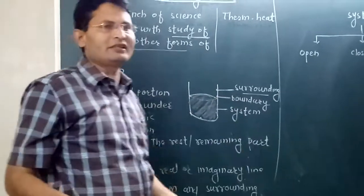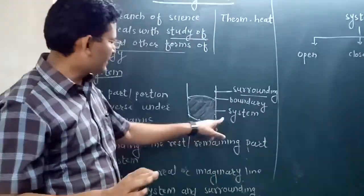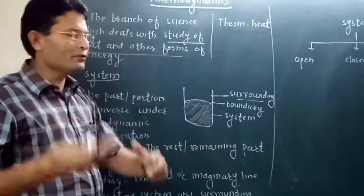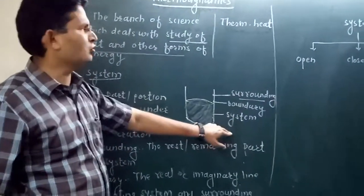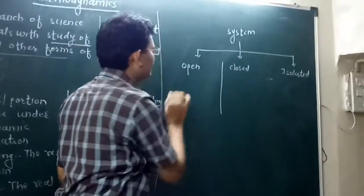There is a difference. All systems cannot be equal. System exchanges things with the surrounding. Based on this, we have bifurcated system into three parts.